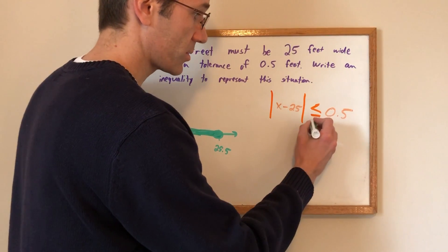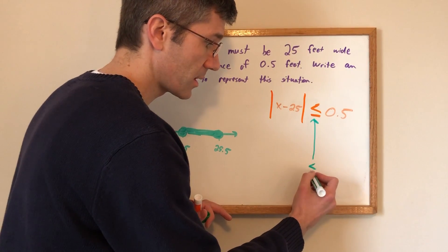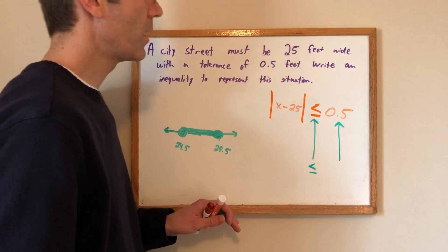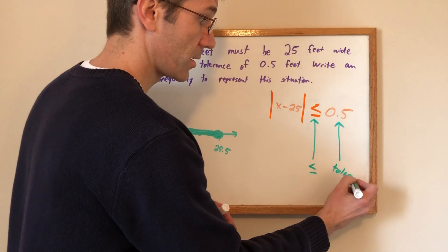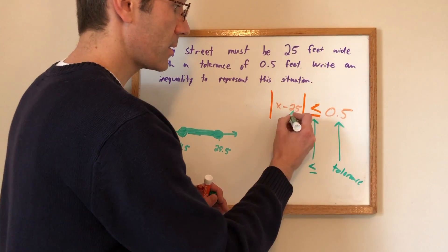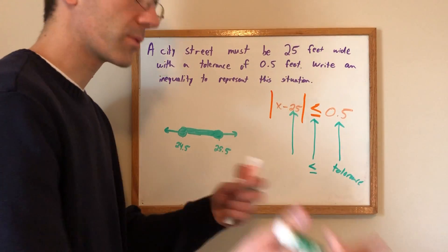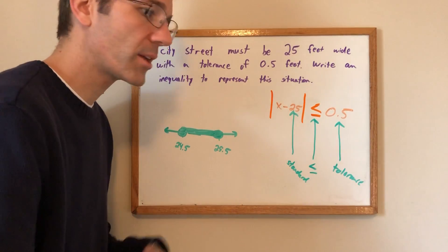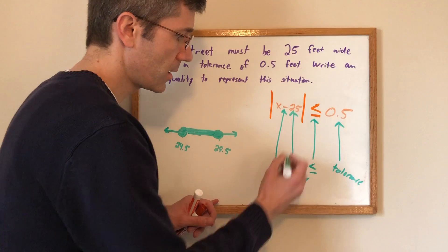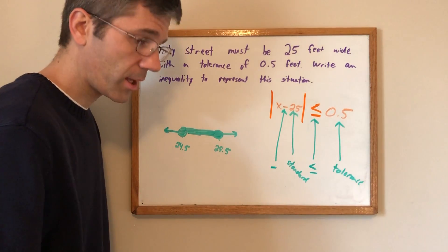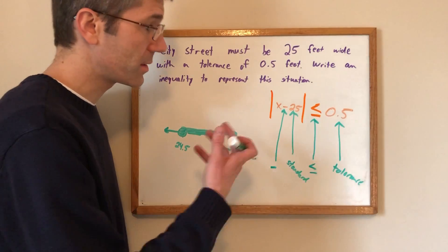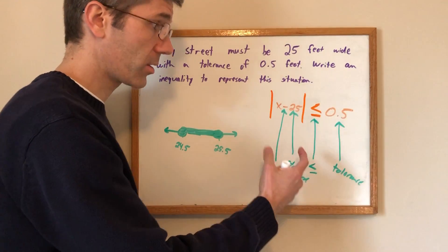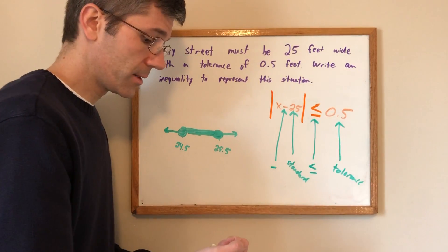So first of all in a tolerance problem this is always less than or equal to. This number in the context of this is going to be the actual tolerance because I could add or subtract that. This is going to be the standard like it's 25 feet wide give or take something. So this is the standard width or standard weight or standard whatever it is and this is always minus. I've never encountered one that wasn't. Within the context of what we're doing this is the way it's going to be set up and this will always be an x. So it's going to be basically absolute value of x minus your standard less than or equal to your tolerance.